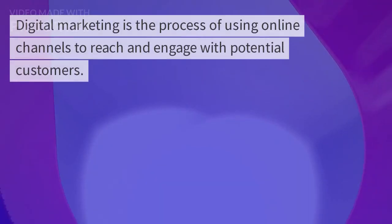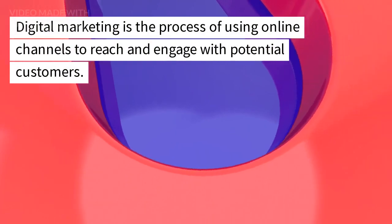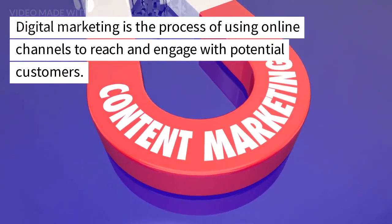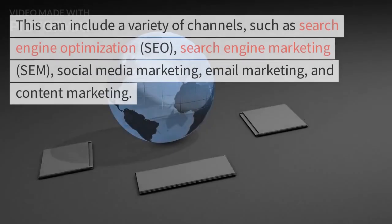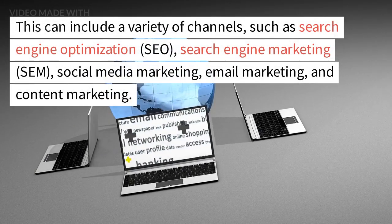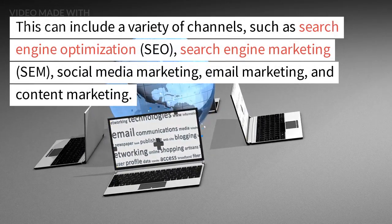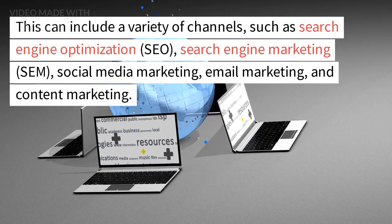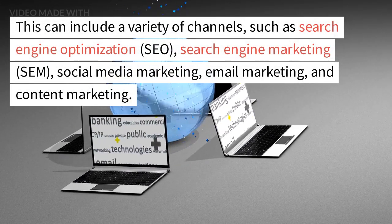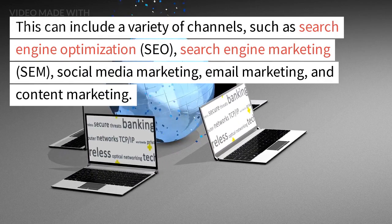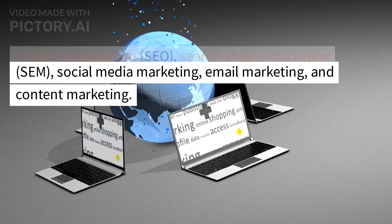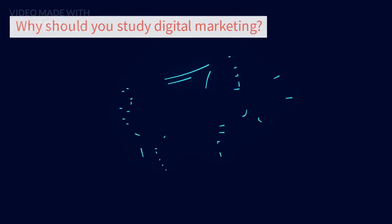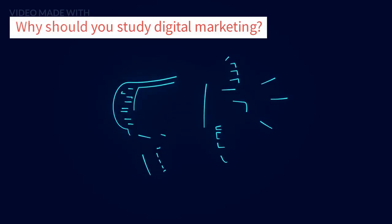What is digital marketing? Digital marketing is the process of using online channels to reach and engage with potential customers. This can include a variety of channels, such as search engine optimization (SEO), search engine marketing (SEM), social media marketing, email marketing, and content marketing.